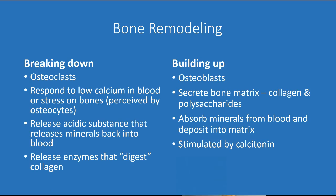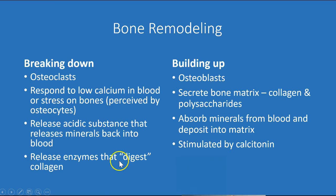Parathyroid hormone is one of the major hormonal signals that stimulates osteoclasts. It responds to low calcium in the blood, or to mechanical stress on the bones from exercise, which the osteocytes sense and signal via signaling molecules. The osteoclasts then come into play and release an acidic substance that breaks down the minerals in the bone, causing them to ionize and go back into the blood where they can be used. Osteoclasts also release enzymes that break down collagen, so essentially the entire bone matrix is getting broken down.